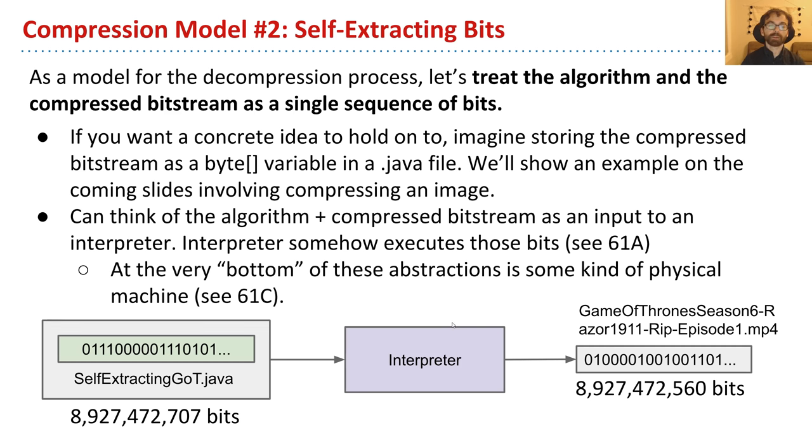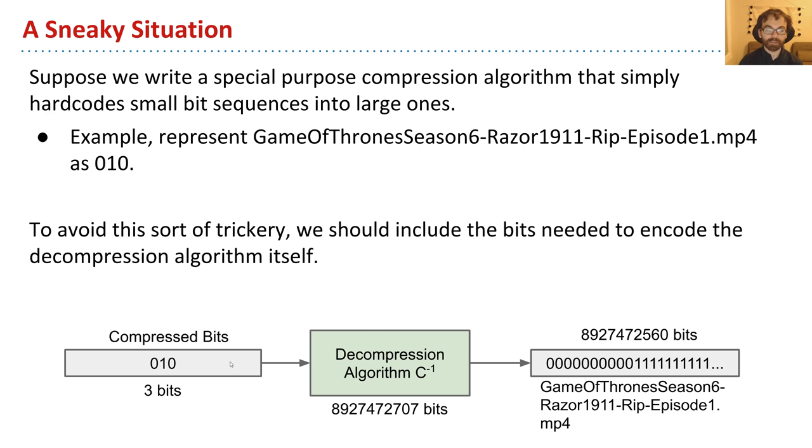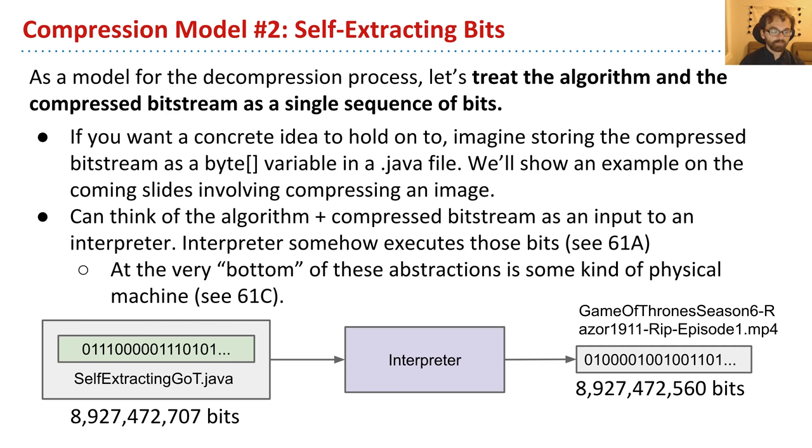So the alternate model is going to be self-extracting bits. So before, our model was, we take some data, we put it into a compressor, and get back some other data. Here, instead, we're going to take our bitstream and give it directly to a Java or whatever language interpreter and get an output bitstream. And in this way, we're keeping things just a little simpler. We're basically wrapping up the compressed bits and the decompression algorithm all into one file, just so we have a more concrete picture of what's going on.